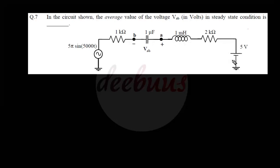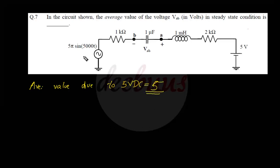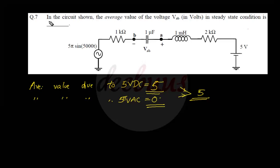In steady state, the 5V DC will appear across the capacitor, so the average value due to the DC source is 5 volts. Due to the alternating source, the average value is zero since both positive and negative halves cancel. The total average value is therefore 5 plus 0 equals 5 volts.